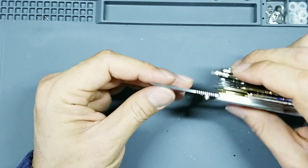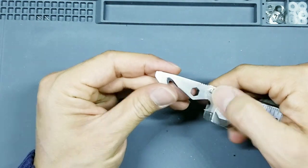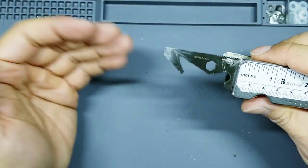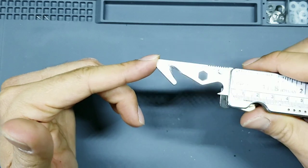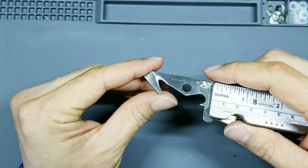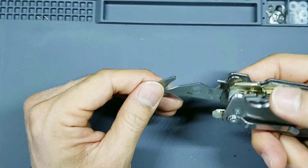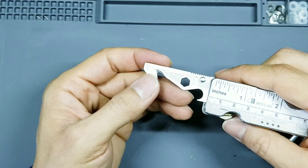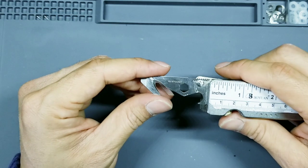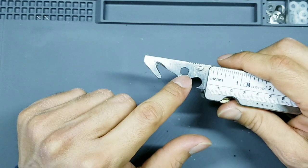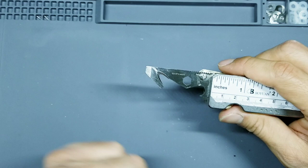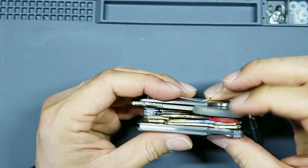The multi-tool option is a thumb stud deployable. It does have a liner lock here and you have a few tools built into it. You have this flat head or chisel at the tip. You have a little bit of jimping here for grip, package opener. You have this quarter inch standard bit driver. You'll just have to carry some bits to make this work. This also will work with the Leatherman half bits as well. And then you have a bottle opener here. That's a look at the multi-tool option.